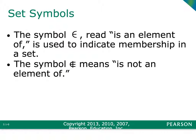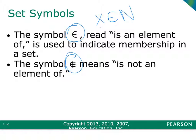A symbol you're going to see often is the little epsilon (∈), which is read as 'is an element of.' So for example, if I wrote X ∈ N, that means X is an element of the natural numbers. You can also use the ∈ with a slash through it, which is read as 'is not an element.' So X ∉ N means X is not an element of the natural numbers.